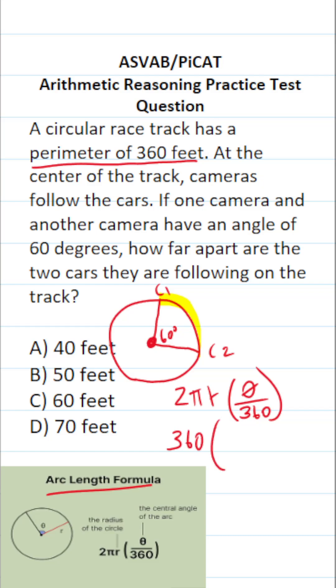What is theta? Theta is the measure of your central angle. We can see that our central angle in this case is going to be 60 degrees. So this becomes 60 over 360. Now, as it happens, this is incredibly easy to solve. These 360s cancel each other out, leaving you 60. In other words, these two cars are C, 60 feet apart on this circular racetrack.